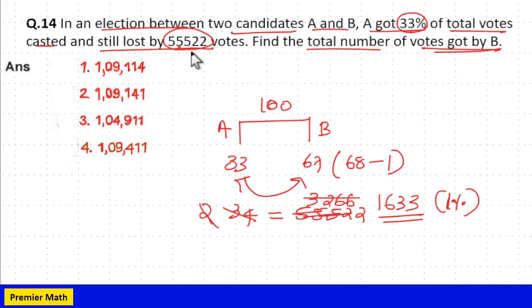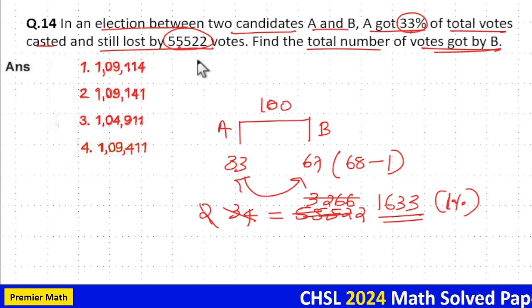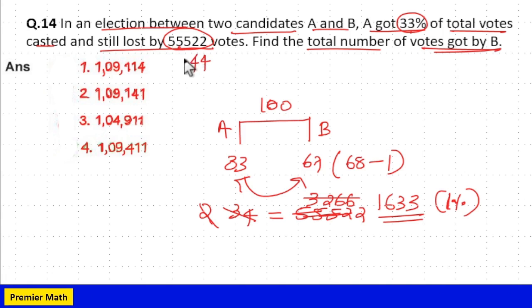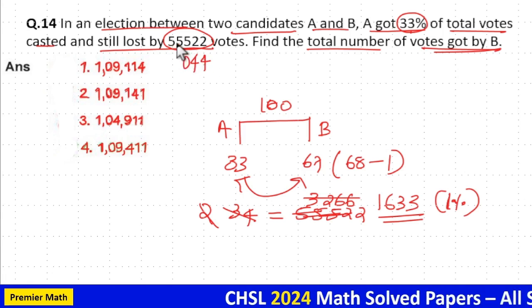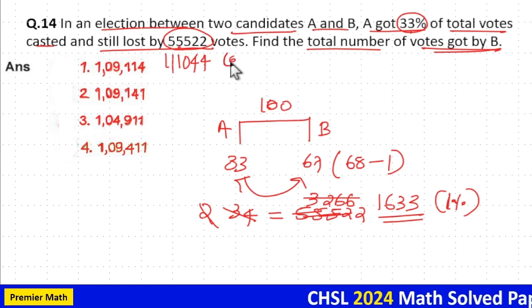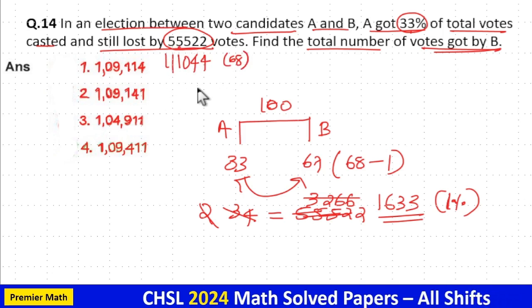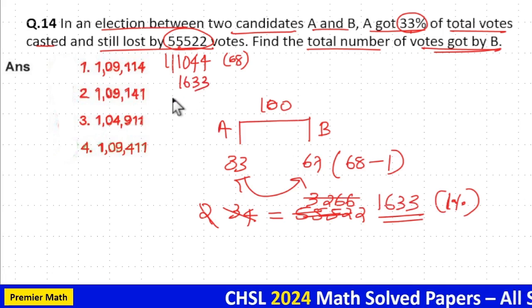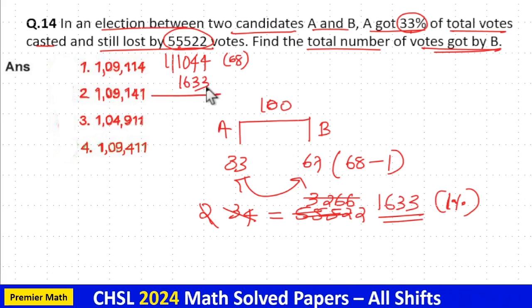Double of 55,522 equals 111,044, which represents 68%. Now, subtract 1% from this — that is, subtract 1,633 from 111,044 — to get 67%.